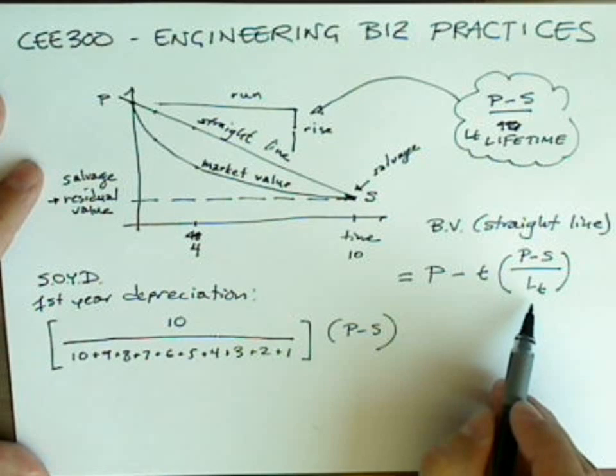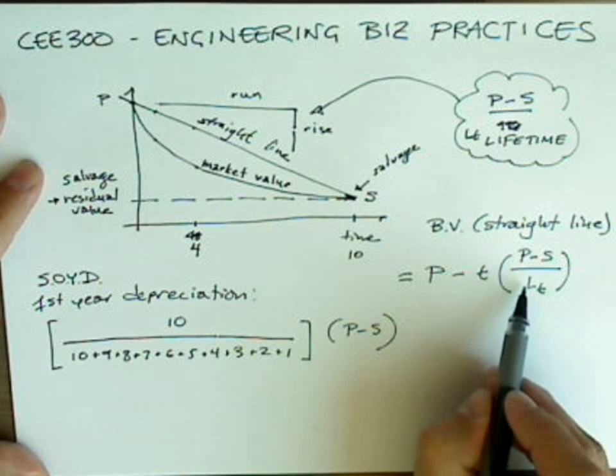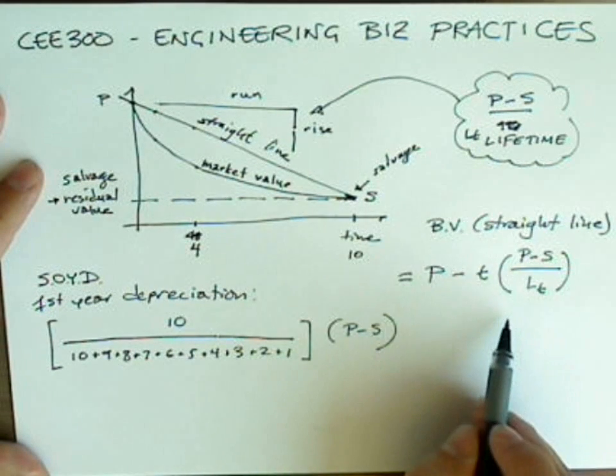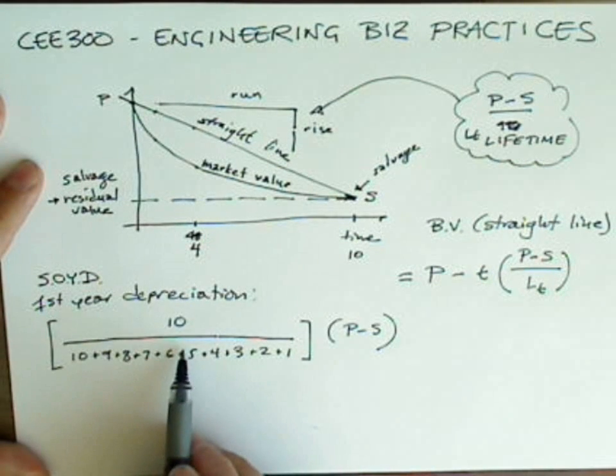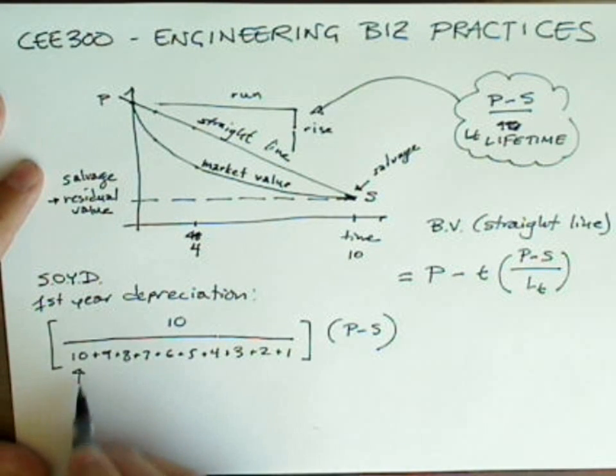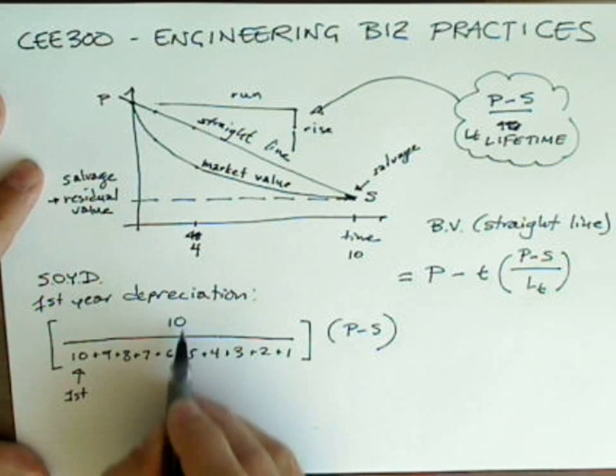So there's a new way now of, in this case, the fraction was one over LT, right? But there's a new way now of determining what that fraction should be. In sum of the year's digits, this is the depreciation in the first year, that goes in the numerator, for the second year, and you're going to see the pattern, third year.